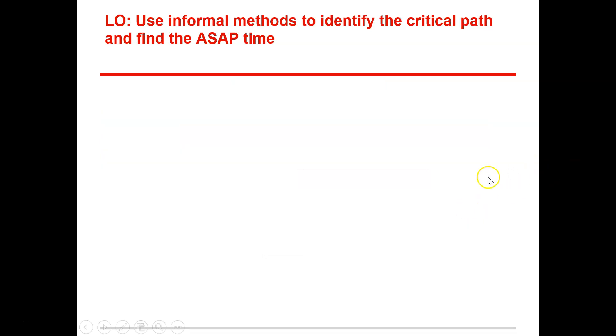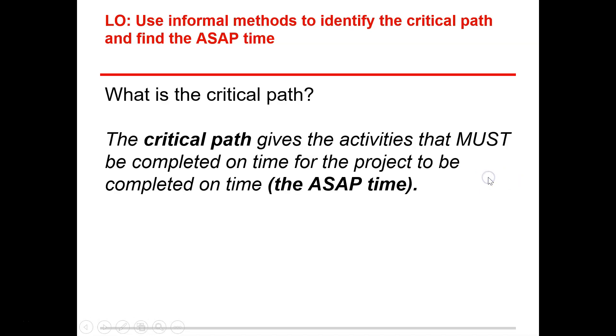Let's keep going and recap what a critical path is. A critical path gives us the activities that must be completed on time for the project to be completed on time. It's the path that holds everything up if it is delayed. If anything's delayed within that critical path, it's going to delay the whole project.